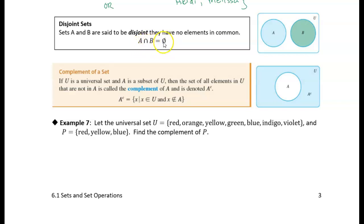So using the intersection, we can also use this definition for a disjoint set. They have no elements in common, so the intersection is the empty set.